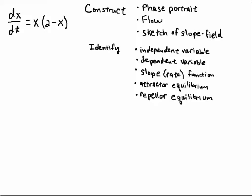So in this video, here's all the things we're going to do. We're going to construct a phase portrait, construct something called a flow, we're going to sketch, give a rough sketch of the slope field, what we'd expect for the slope field, and then we're going to identify the independent, dependent variables, the slope function, and two equilibrium points or solutions.